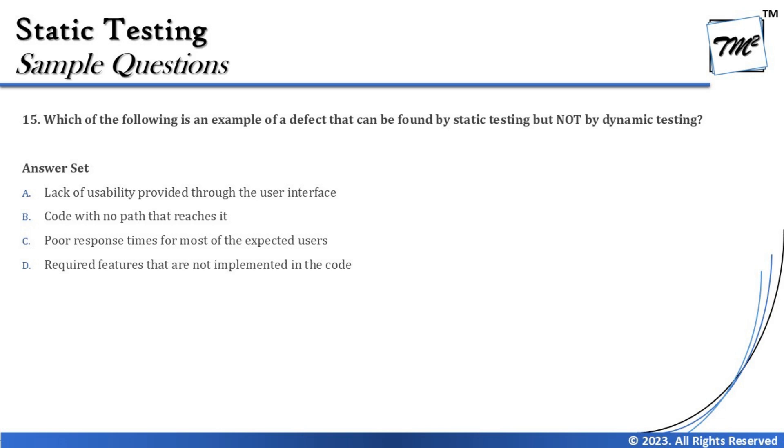The first question we are looking at is question number 15, which says: which of the following is an example of a defect that can be found by static testing but not by dynamic testing? The key point here is that in topic 3.1 of our syllabus, we clearly described the list of possible defects that can be found by static testing compared to dynamic testing.